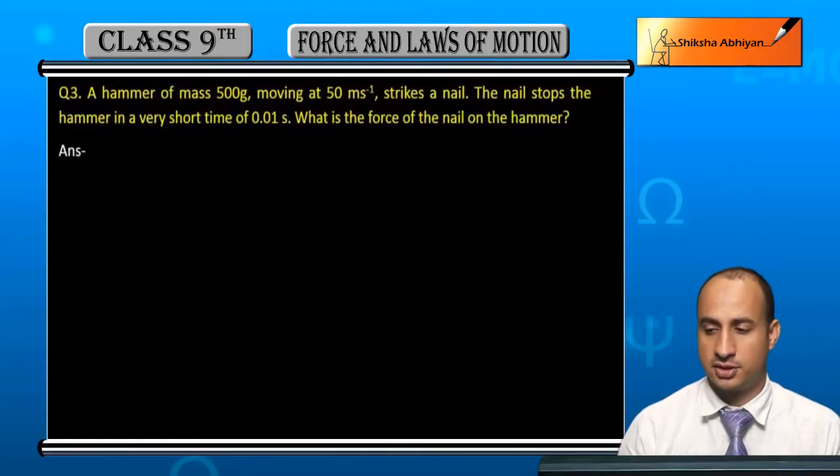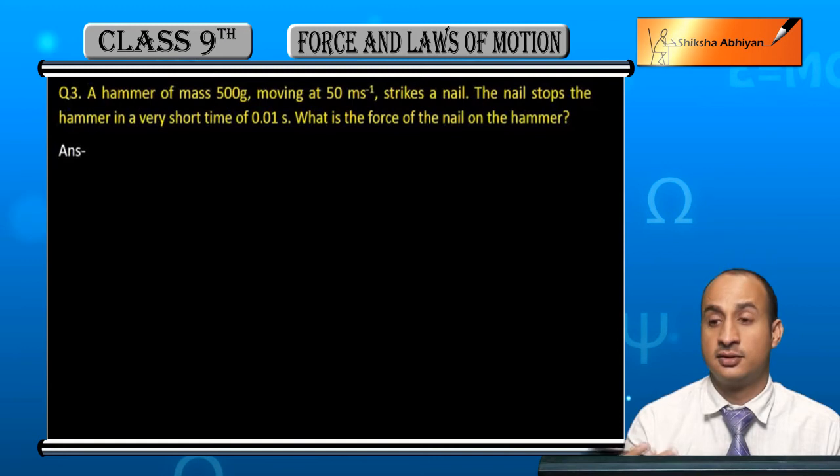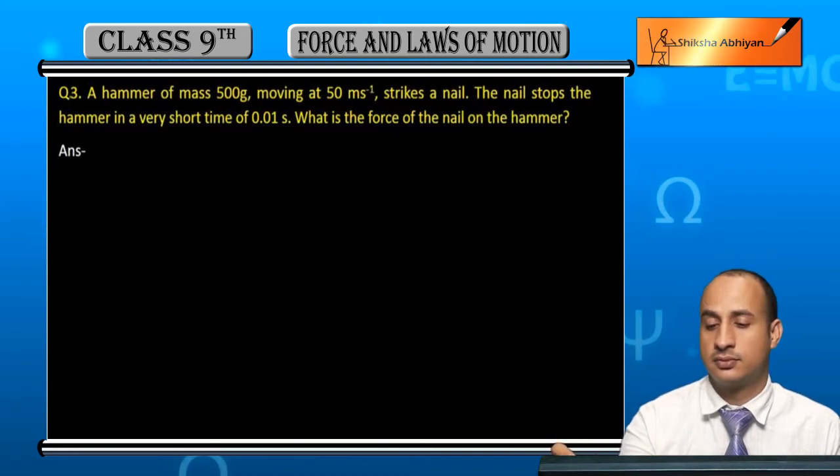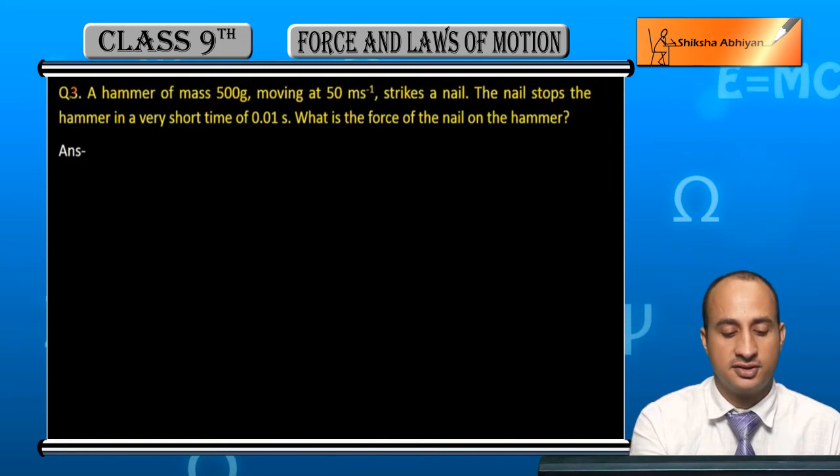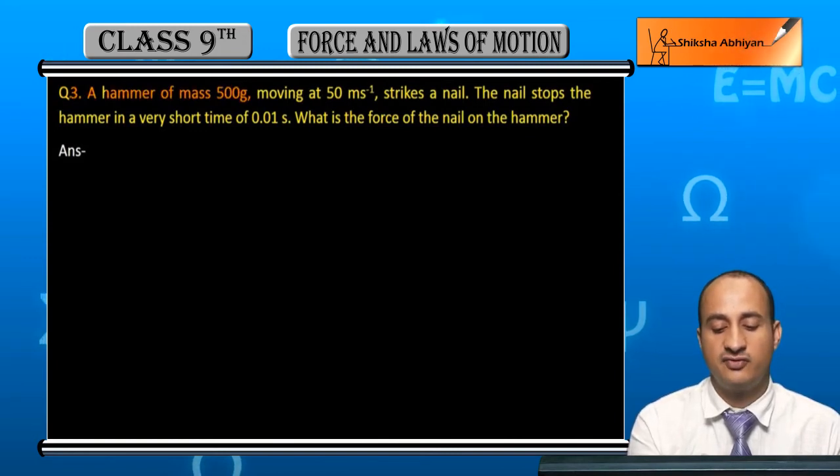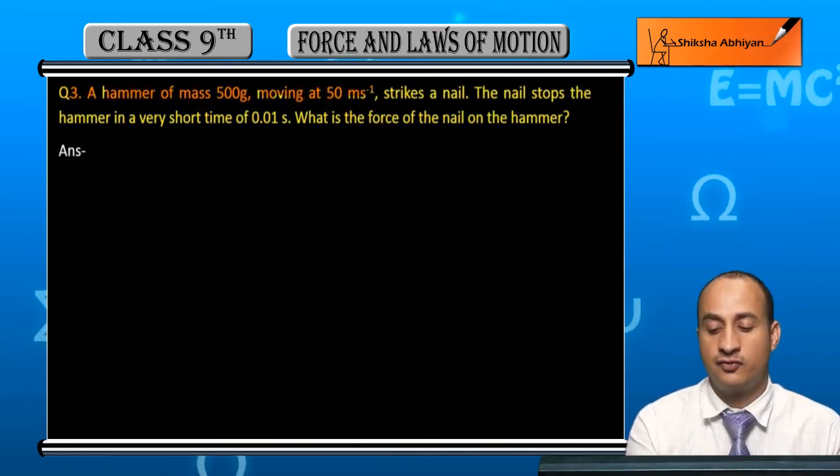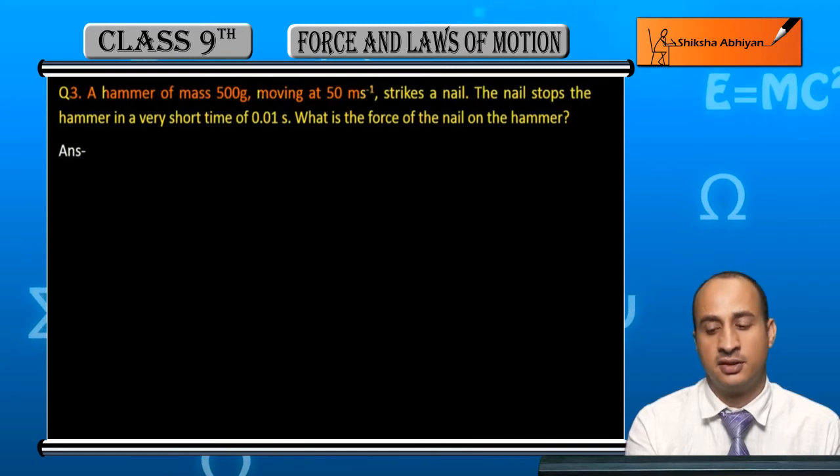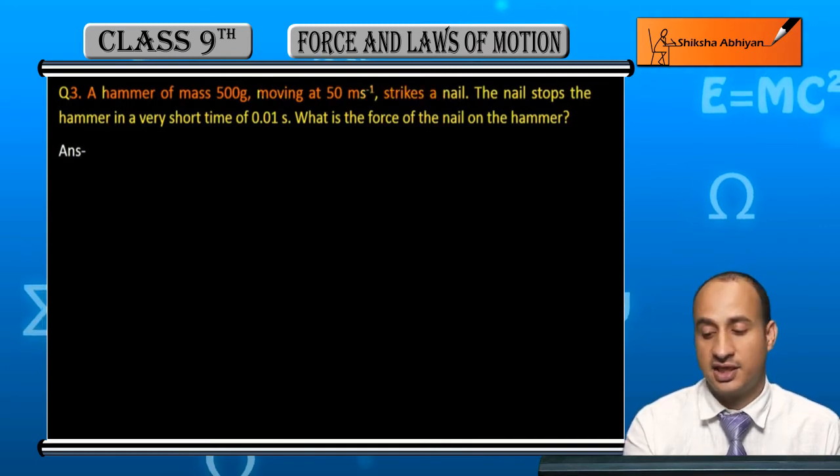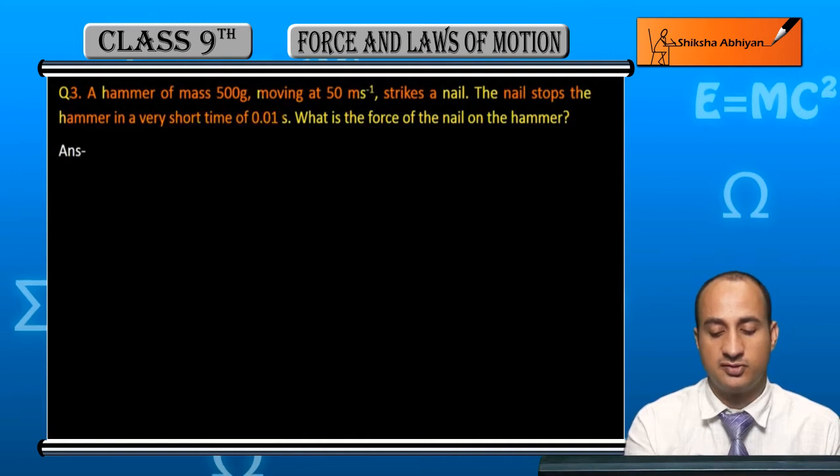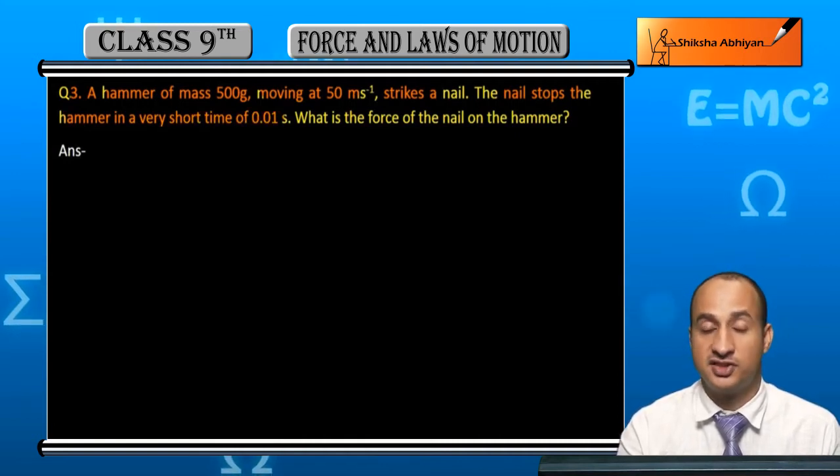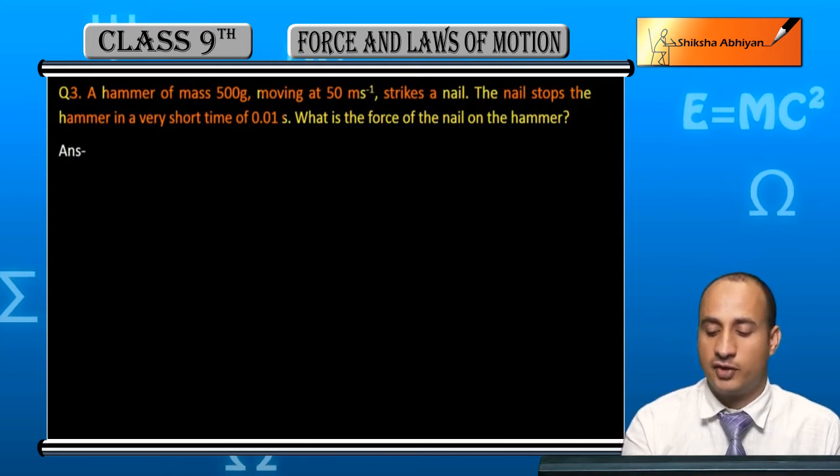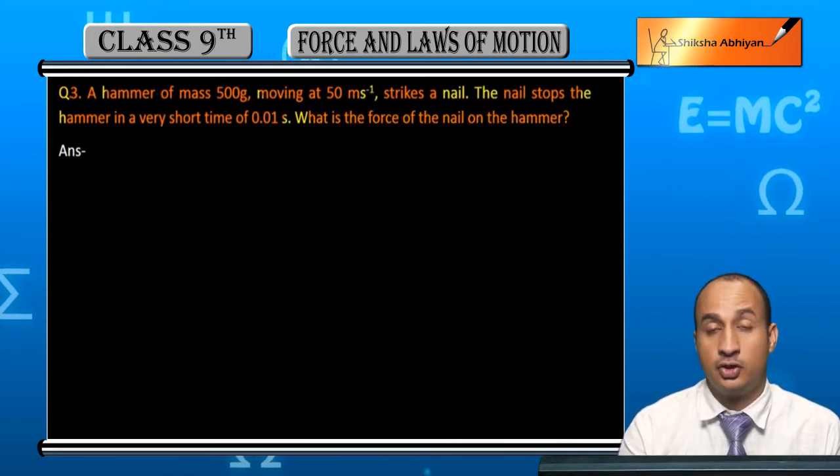Now students, the third question is: A hammer of mass 500 grams moving at 50 meters per second strikes a nail. The nail stops the hammer in a very short time of 0.01 seconds. What is the force of the nail on the hammer?